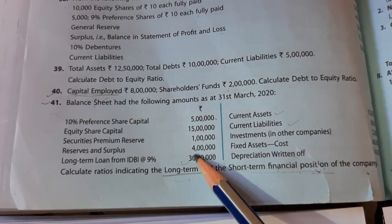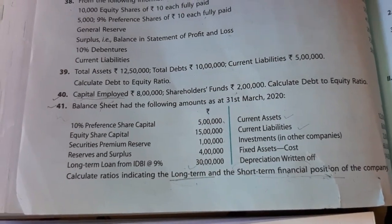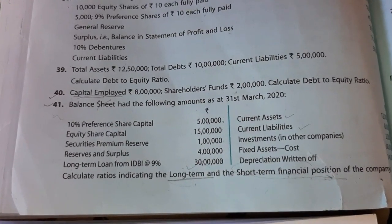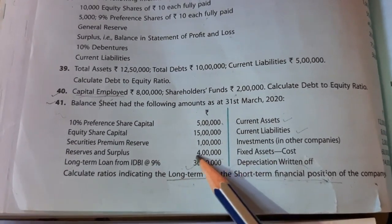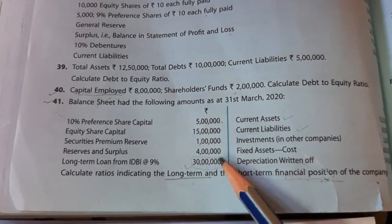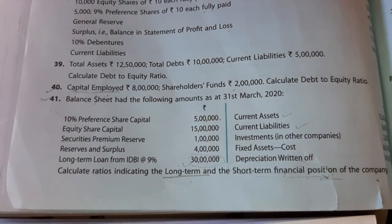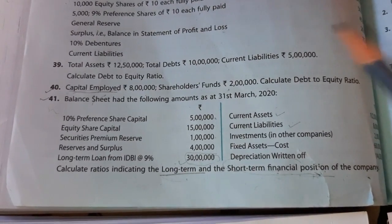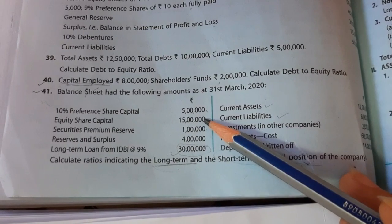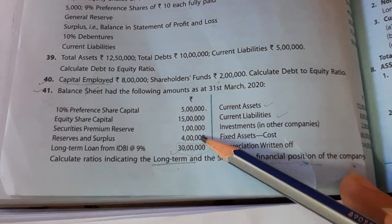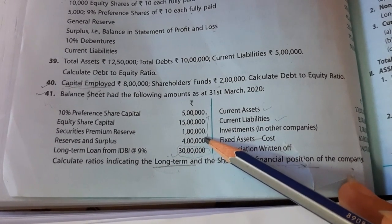Long-term debt is the 30 lakh IDBI loan. For equity: 10% preference shares, equity share capital, security premium, and reserves and surplus are all part of equity.